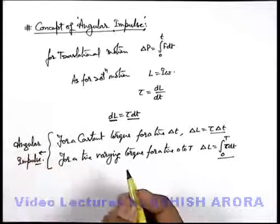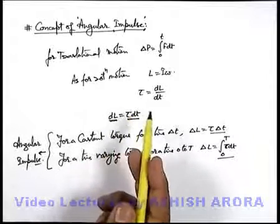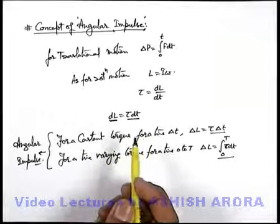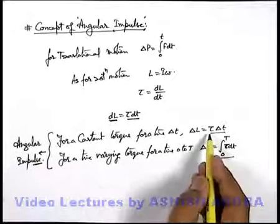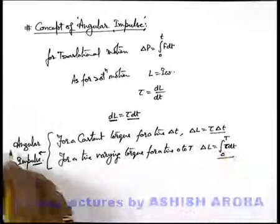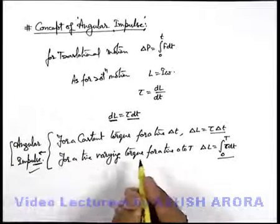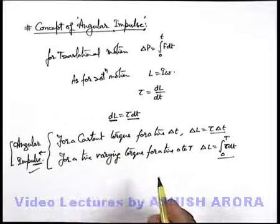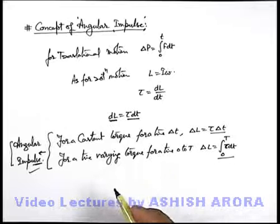Just keep in mind: in translational motion, for a given force applied for a given duration, the product of force and the time for which it is applied is termed as impulse. Similarly, the product of torque and the time for which the torque is applied is given as angular impulse. We are going to take many applications related to angular impulse, which are extremely helpful for shortening the solution of complex problems.